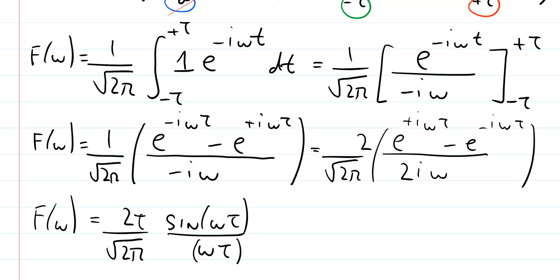The function sin(ωτ) over ωτ is what's known as a sinc function. We have a sine function giving oscillations, modulated by the factor ωτ in the denominator, which means the oscillations get less and less intense as we move away from ωτ = 0 — they're damped by the term in the denominator. The only tricky point is when ωτ = 0, where both numerator and denominator vanish. However, using the series expansion for sine, it can be shown that in the limit ωτ → 0 the function tends to 1, so it is well behaved at the origin.